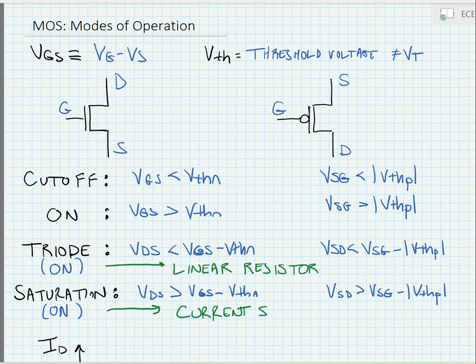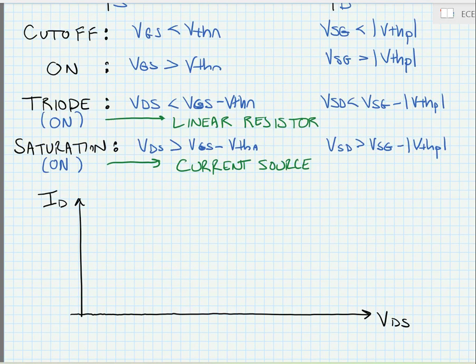Now, just like for a bipolar transistor, we can look at characteristic curves for a MOS device. Here we have a plot of the drain current as a function of the drain-to-source voltage.